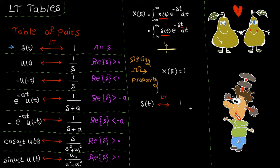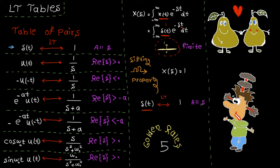Delta(t) at the origin is 1, so we get 1. The Laplace transform of delta is 1. Now let's talk about ROC. The delta function is non-zero only at the origin in the time domain, meaning the signal has finite duration. According to the golden rules, the ROC is everywhere in this case as there is no pole to mess with stability.